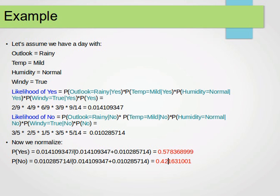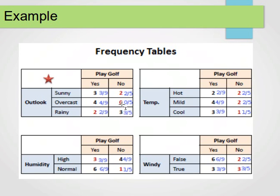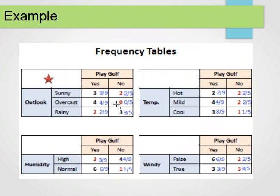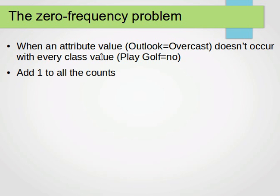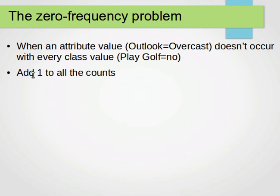This is how the Naive Bayes classifier works. You may have noticed that because we multiply probabilities, if we have zero frequencies we have a problem — multiplying by zero gives zero for that value. This is called the zero frequency problem. It happens when an attribute value, for example outlook equals overcast, doesn't occur with every class value — for example with play golf equals no, the count is zero.